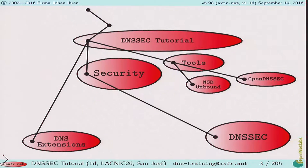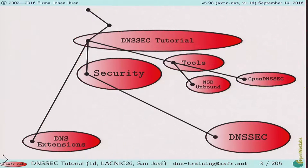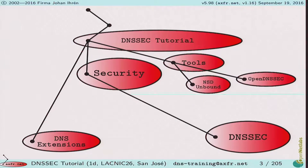The tools we will be using are primarily NSD, which is an authoritative name server; Unbound, which is a recursive name server; and OpenDNSSEC, which is a DNSSEC signing engine.